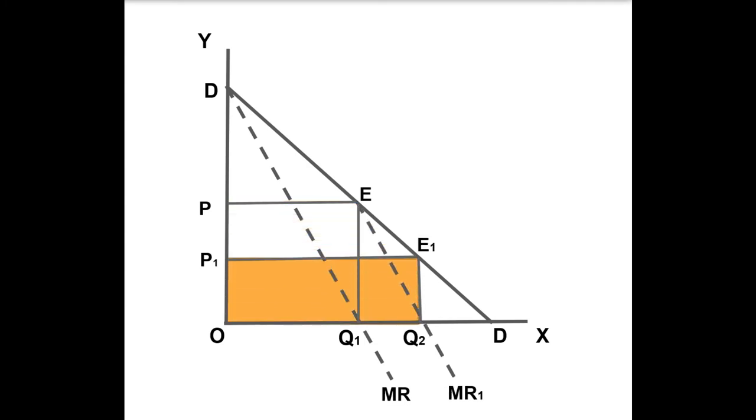Now, seller B enters the market after him and considers the segment ED as his demand curve. Under the Cournot assumption that his rival A will not change his output, he will sell Q1 Q2 amount of output at OP price.